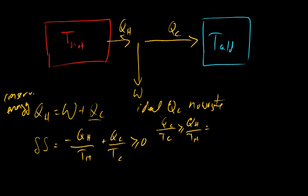So I get QC over TC has to be greater than or equal to QH over TH. And then, applying the conservation of energy rule, this is just W plus QC over TH. And this allows us to multiply through and bring the QC over. It gives us a term QC has to be greater than or equal to W times TC over the difference in the hot and the cold temperatures.